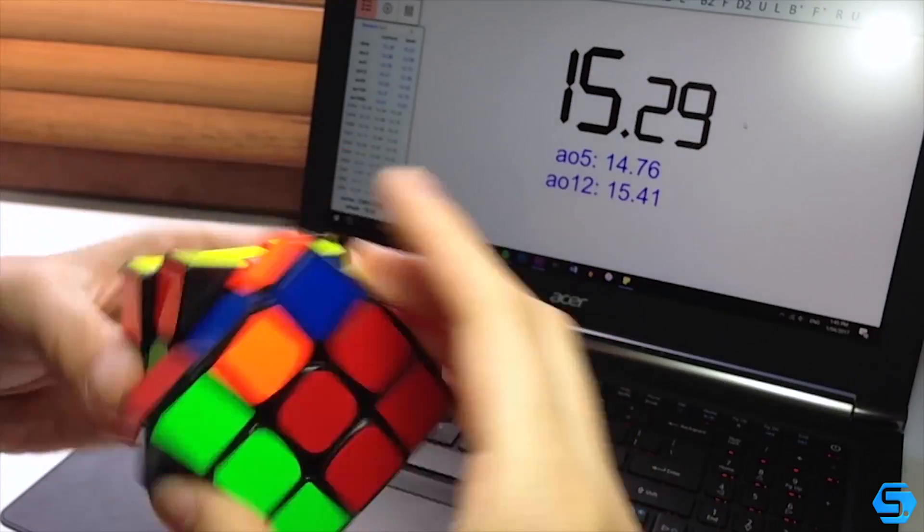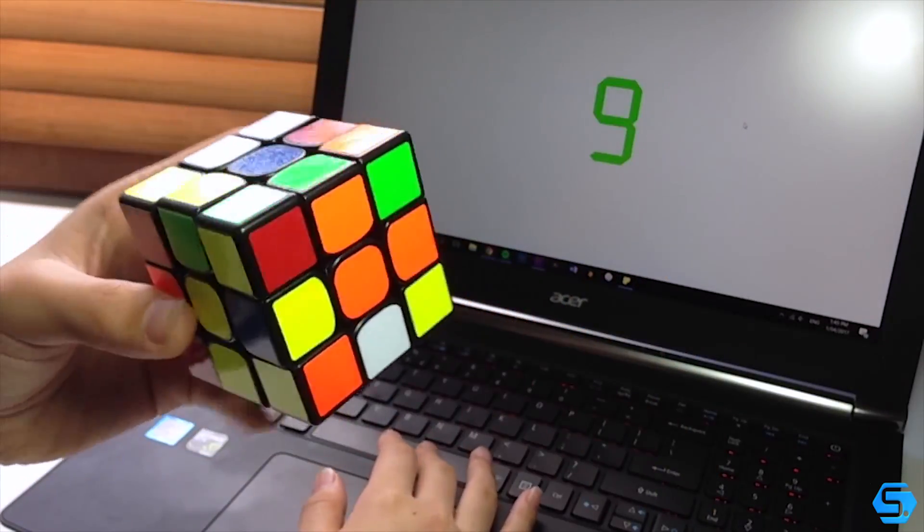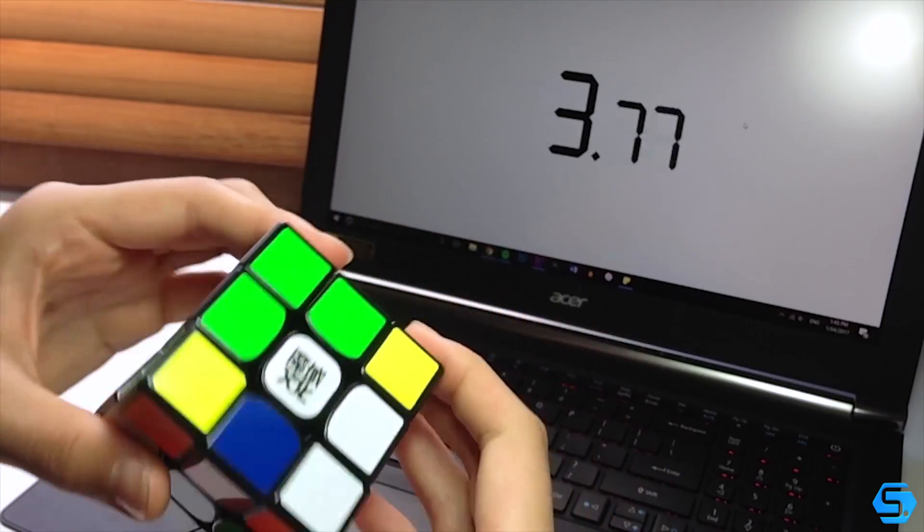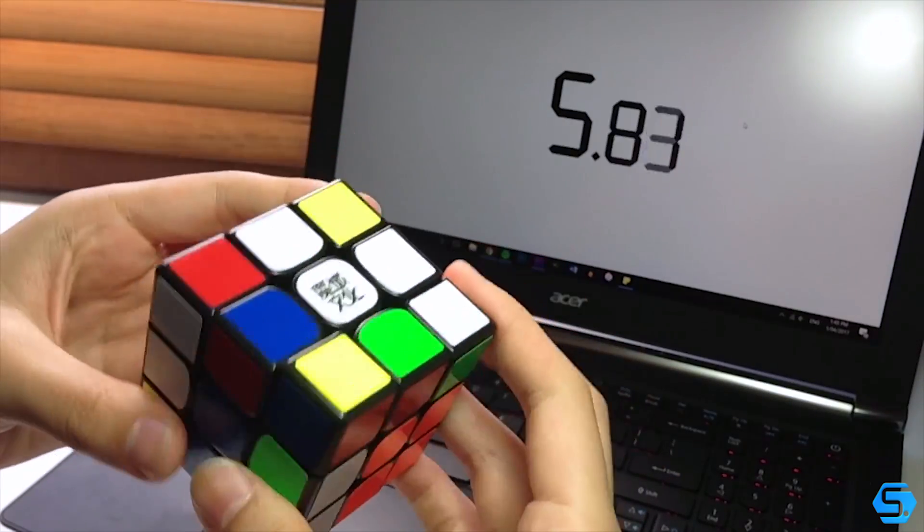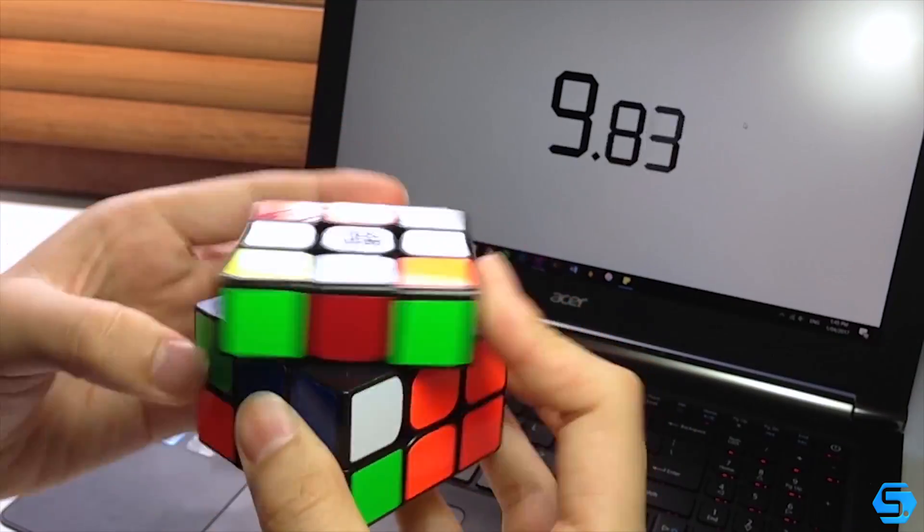the second question comes from Sakwitta, and he asks, is there anything that you wish you would have done differently when you first started cubing? So I can't really think of anything that I wish I would have done in terms of improvement, but there is one thing that I kind of regret doing, and that is selling my first speedcubes.